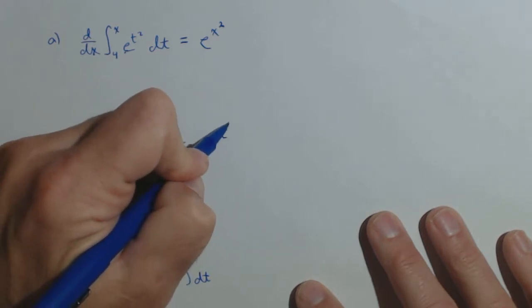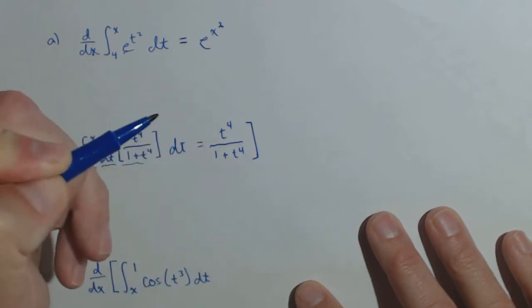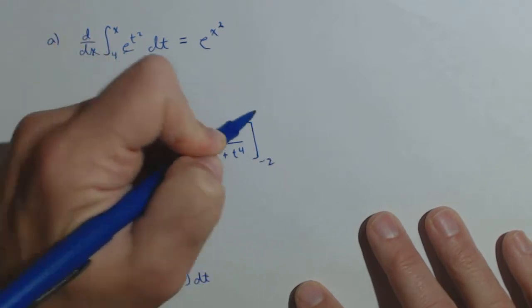So, we have t to the fourth over one plus t to the fourth, and then we apply our limits, negative two to x.